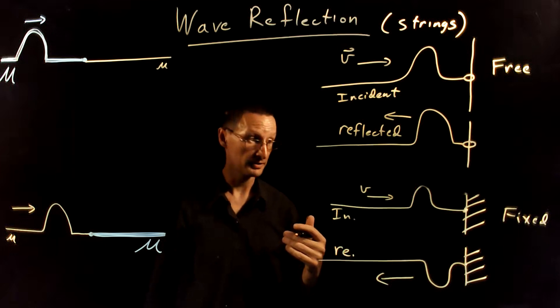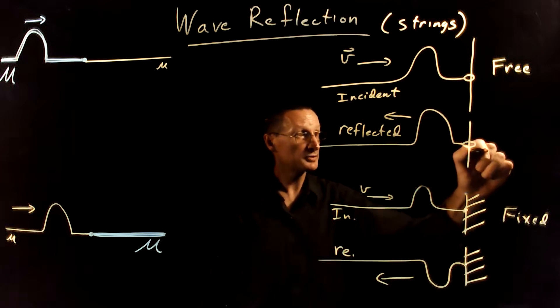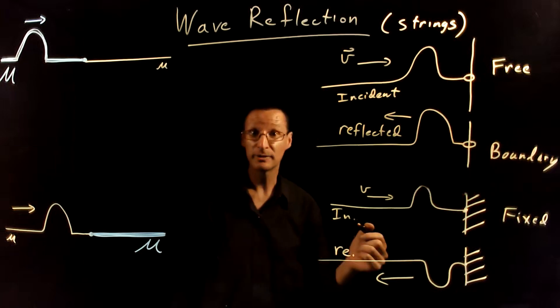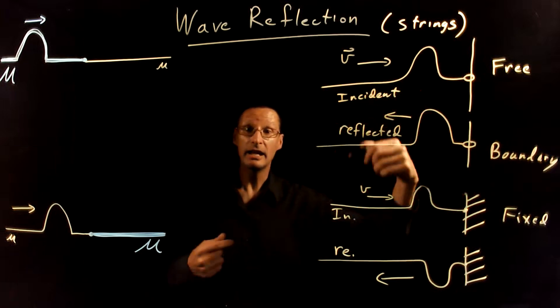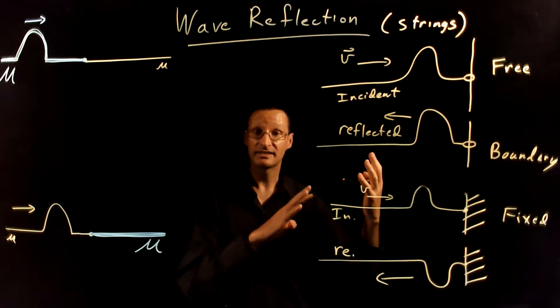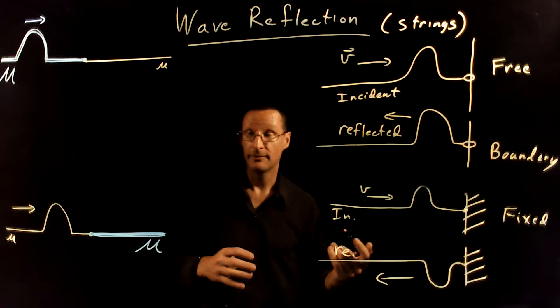Both of these situations feature a boundary, and these things are called boundary conditions. Anytime you have a boundary or a boundary condition, you usually will get some kind of reflected wave.